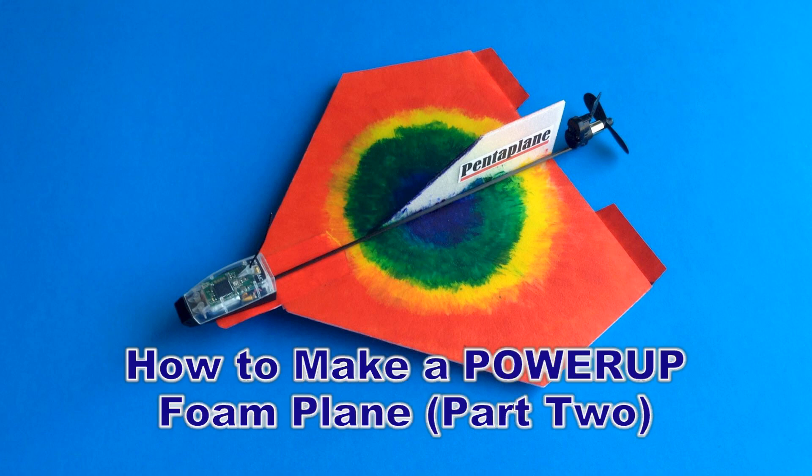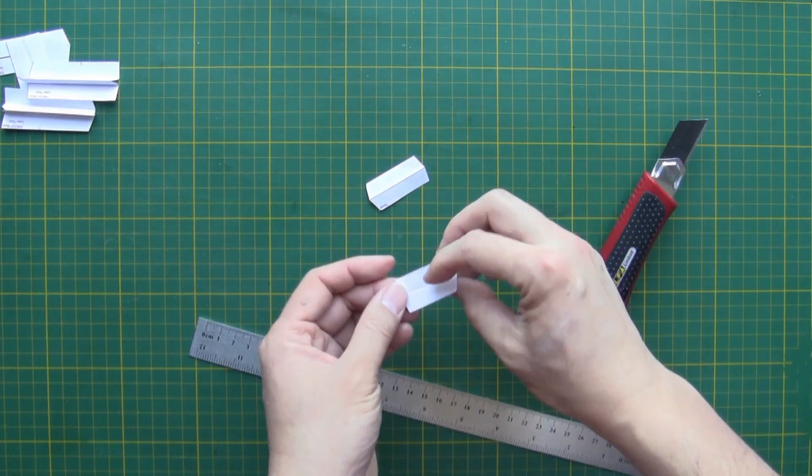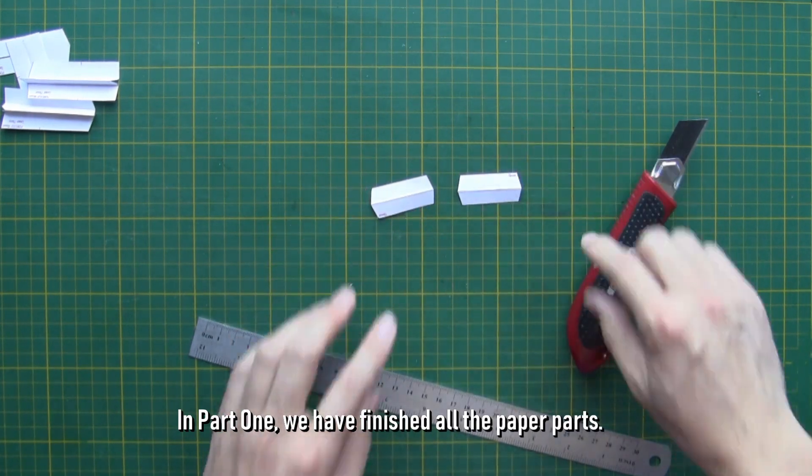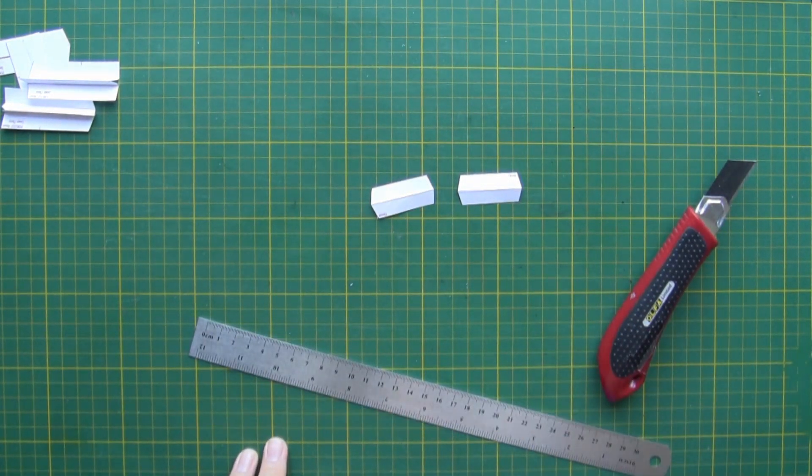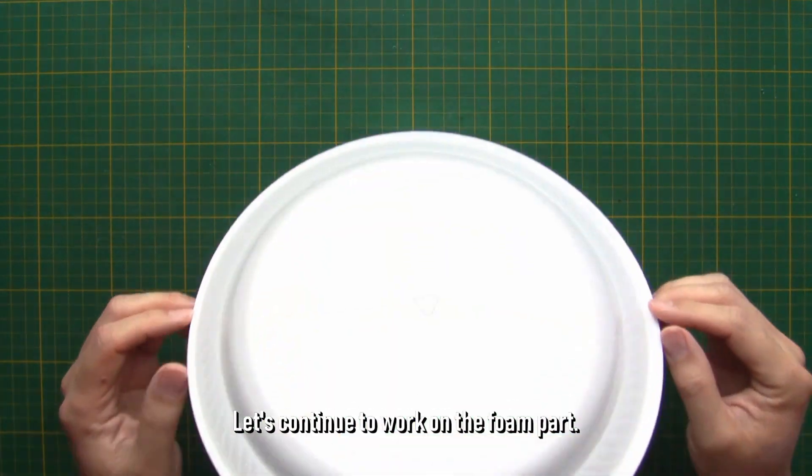How to make a power-up foam plane part 2. In part 1, we have finished all the paper parts. Let's continue to work on the foam part.